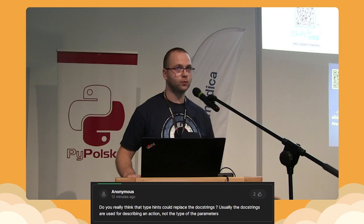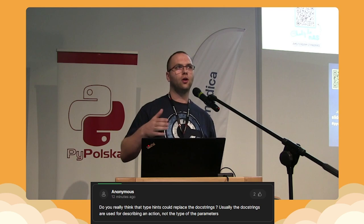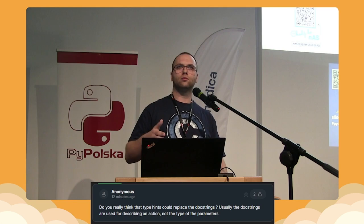First question: do you really think type hints could replace docstrings? I hope so. If you combine type annotations with Clean Code principles from Uncle Bob, you could probably get to the point where docstrings are not needed. But that's not only about type hints — it's about code organization so the code explains itself. It's a bit optimistic; I don't think we can get rid of docstrings entirely, but you can minimize their impact.